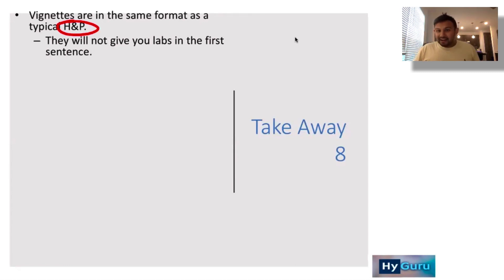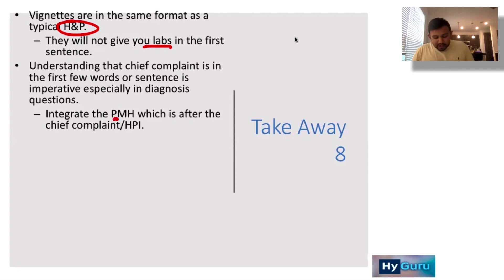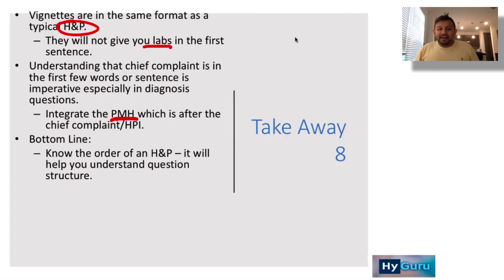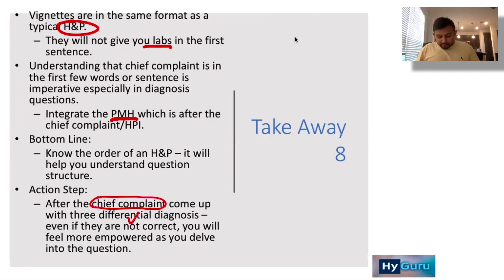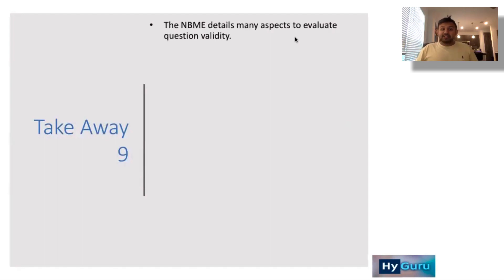Takeaway number eight: vignettes are in the same format as a typical HMP. They won't just flash labs and say 'interpret these.' They give a chief complaint in the first few words, past medical history in the first couple of sentences, then medications, physical exam, and labs. Understanding this HMP order helps you understand question structure. As an action step: after reading the chief complaint, try to generate three good differential diagnoses — this builds confidence as you move through the question.